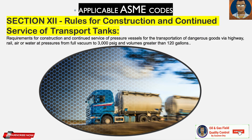Section 12 covers rules for construction and continued service of transport tanks — requirements for pressure vessels used in the transportation of dangerous goods via highway, rail, air, or water at pressures from full vacuum to 3,000 psi and volumes greater than 120 gallons.